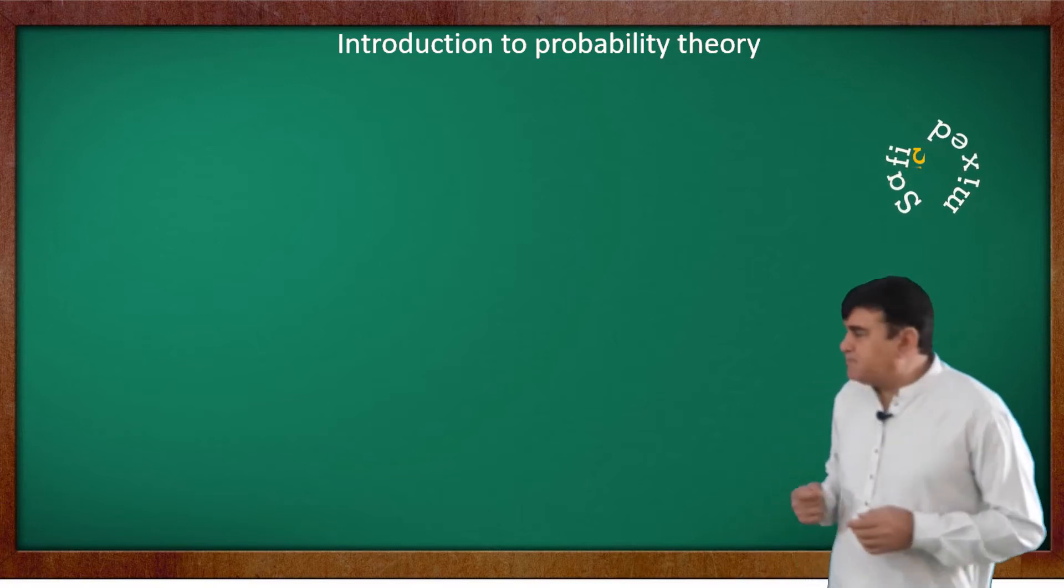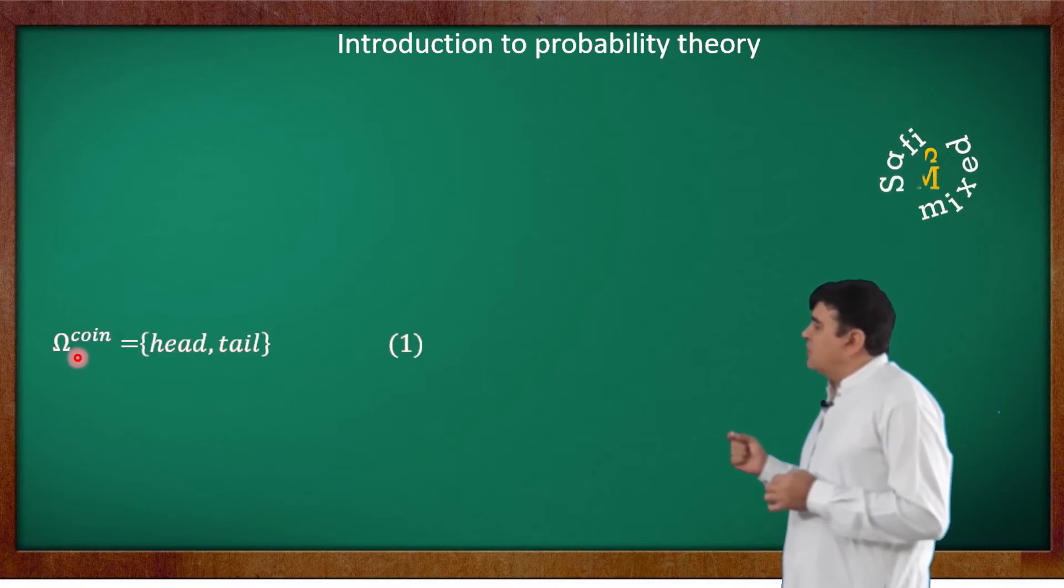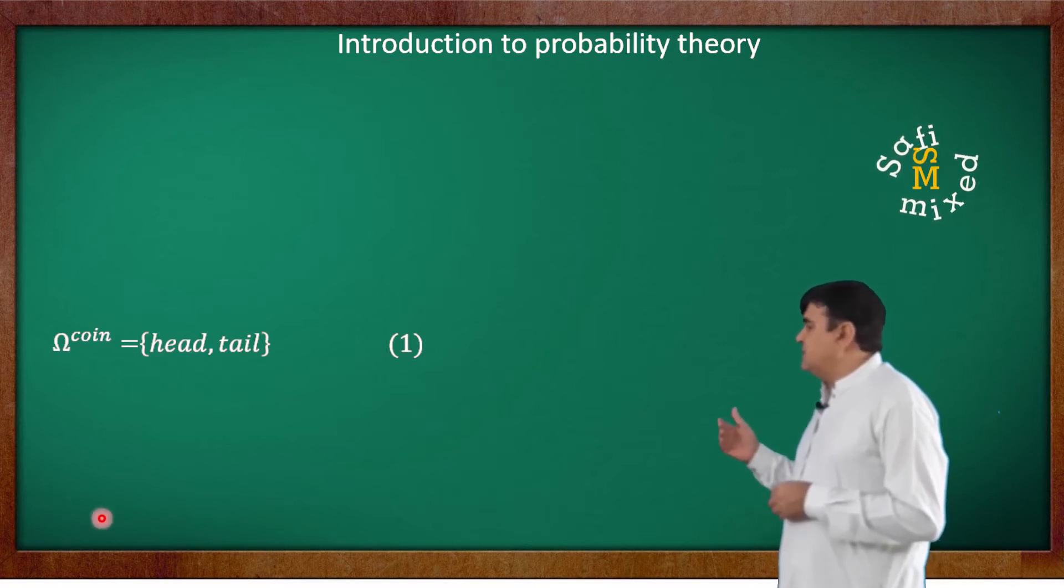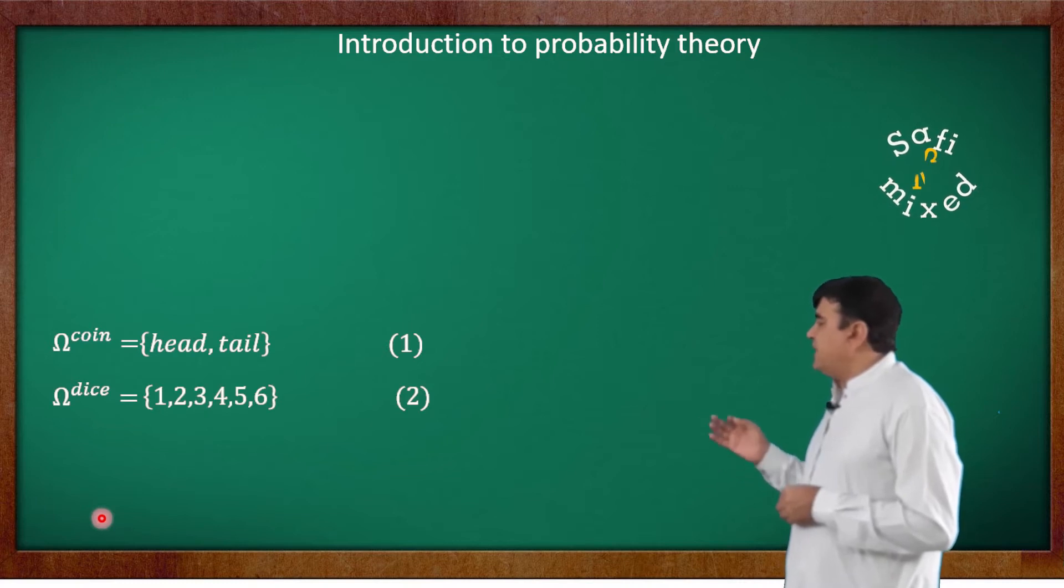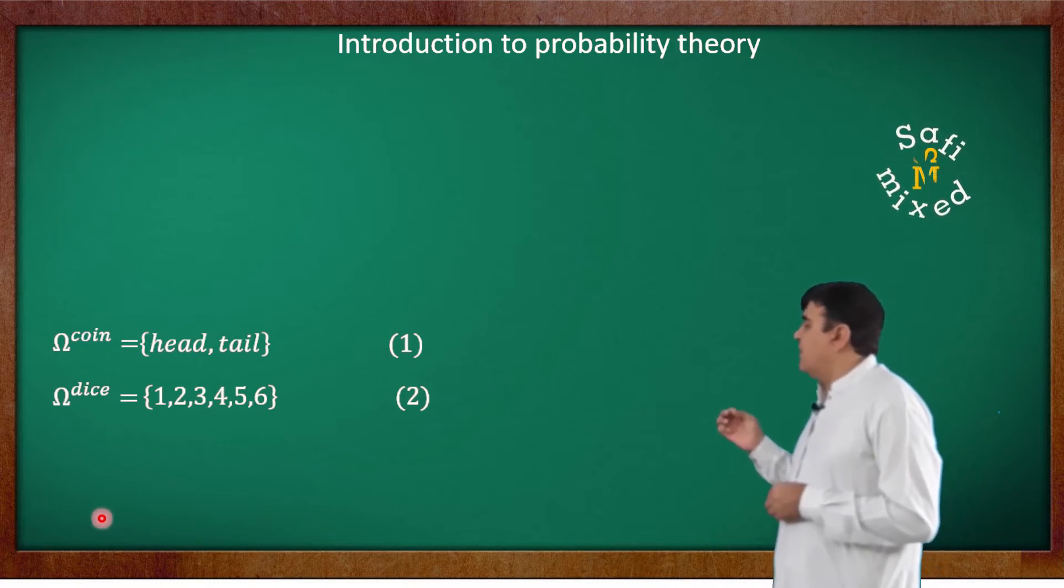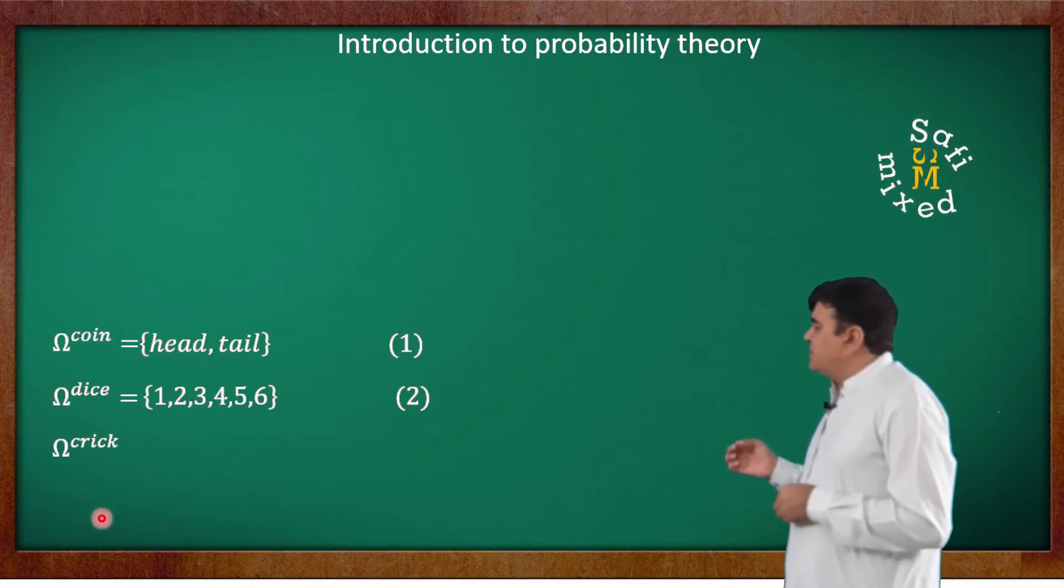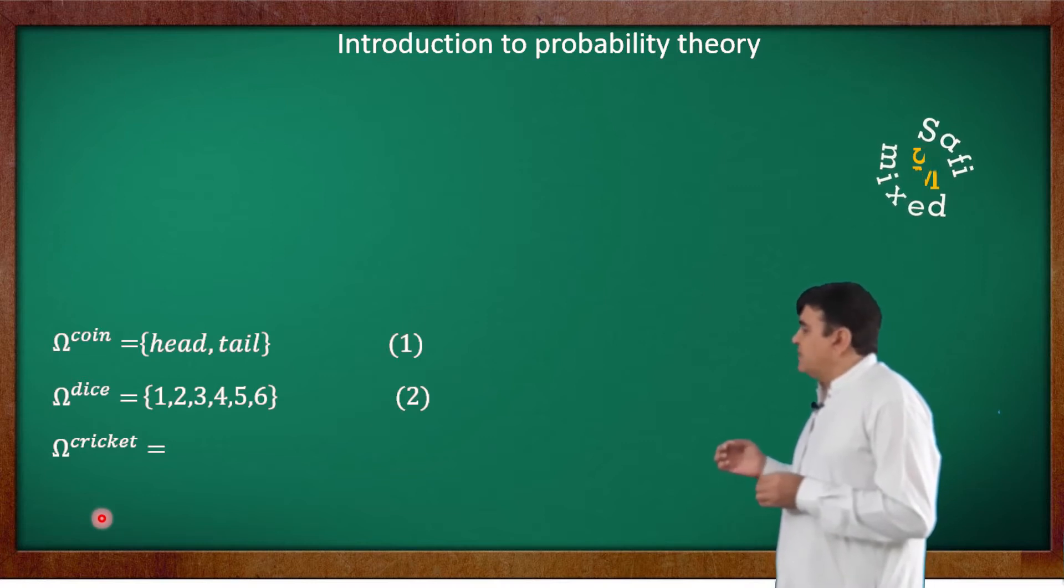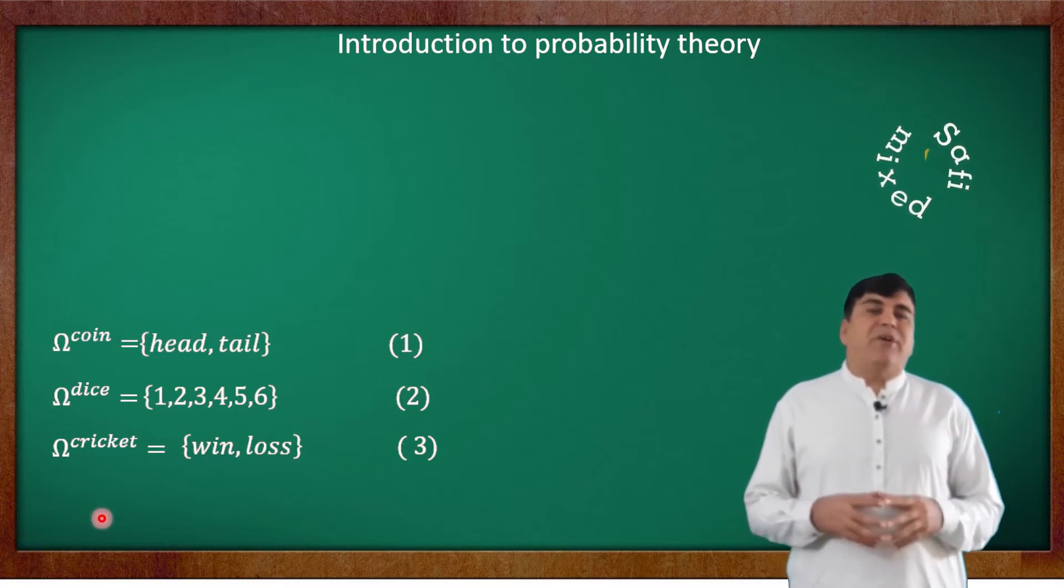The sample spaces of these events are written in the form of these lists: Ω^coin equals the list of two possible outcomes represented by head and tail. Similarly, Ω_dice is written as the list of numbers ranging from 1 to 6, where each number corresponds to a face of a dice. And the sample space of cricket match again consists of two events, represented by win and loss.